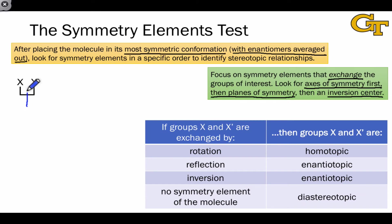If we find that an axis of rotational symmetry exchanges the groups, as it does in this case, a C2 axis, then the groups of interest are homotopic. If we don't find a rotational axis of symmetry that exchanges the groups, we then move to looking for a plane of symmetry. If a plane of symmetry exchanges the groups, but not a rotational axis, the groups of interest have an enantiotopic relationship.